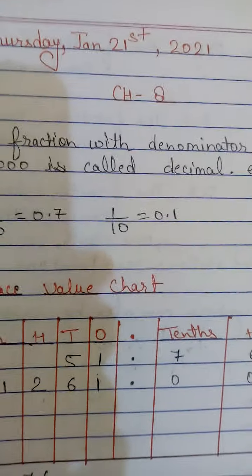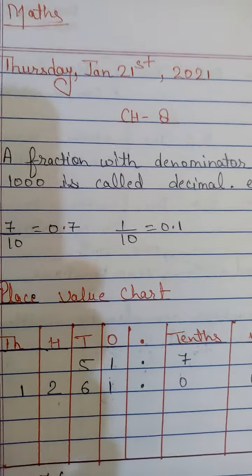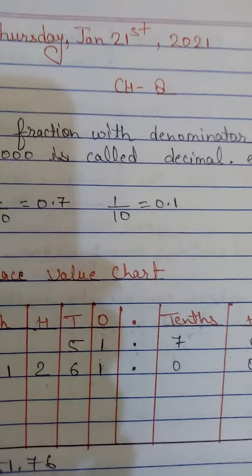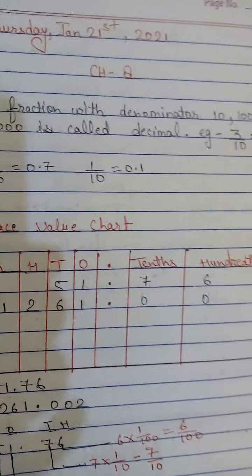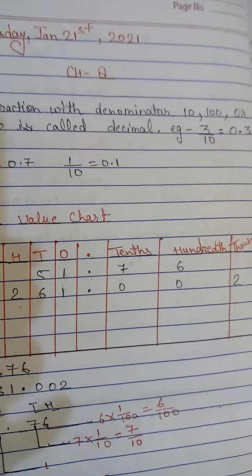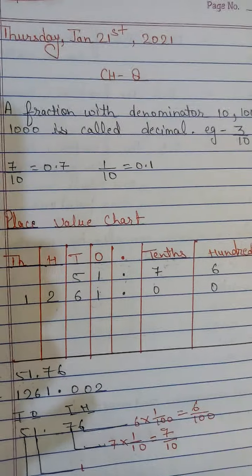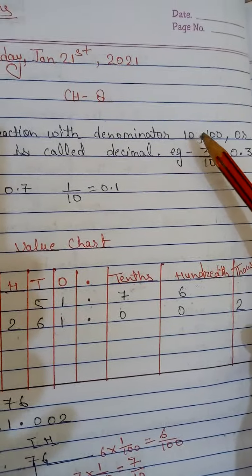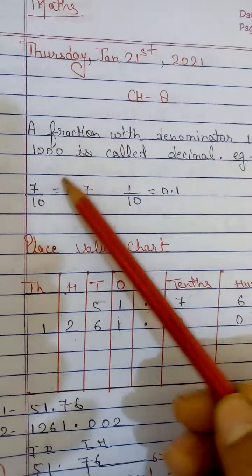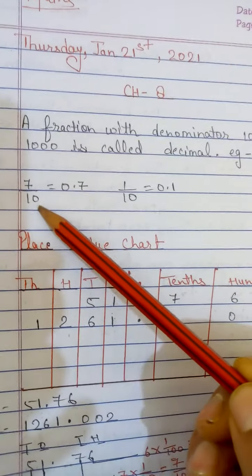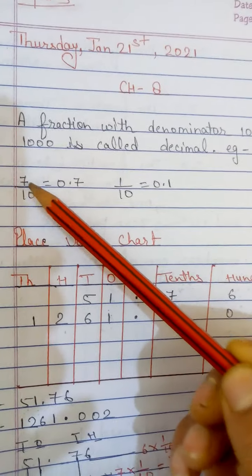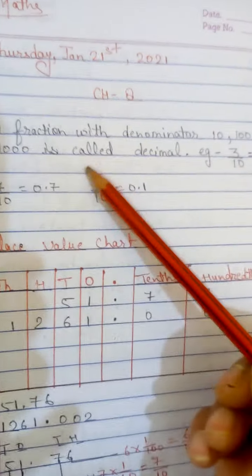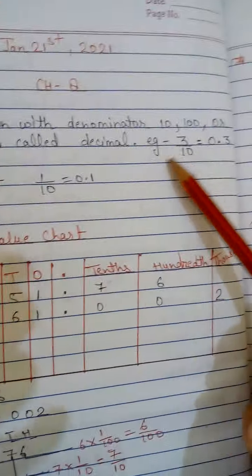Today, Thursday January 21st 2021, we are on Chapter 8. A fraction with denominator ten, hundred, or thousand is called a decimal. The denominator here is ten, hundred, or thousand, and the numerator is on top. So ten as a denominator place — a thousand denominator is called a decimal.